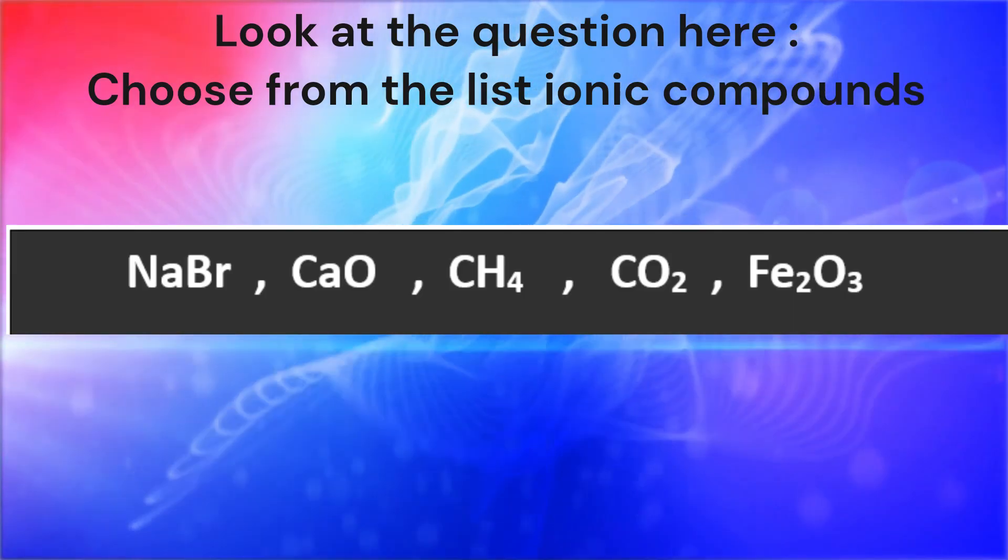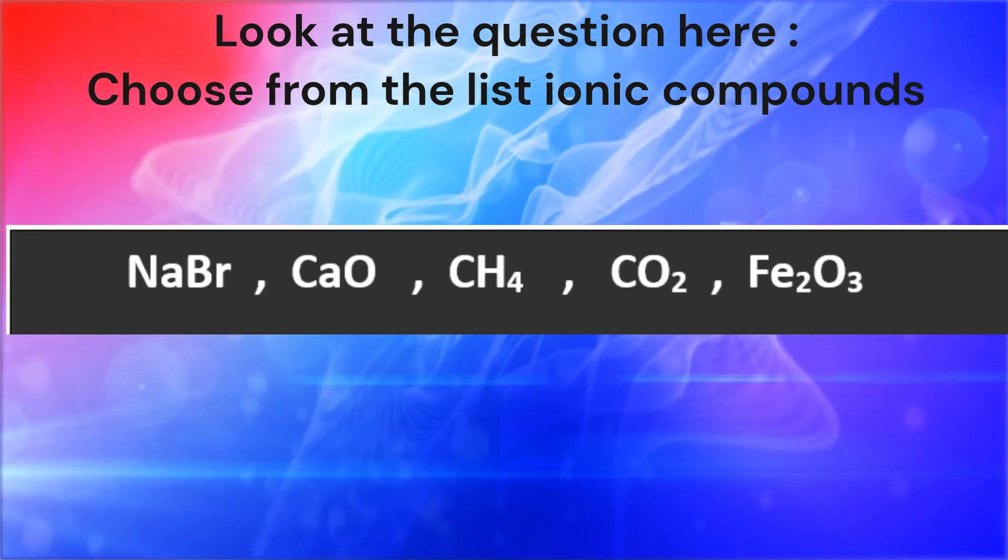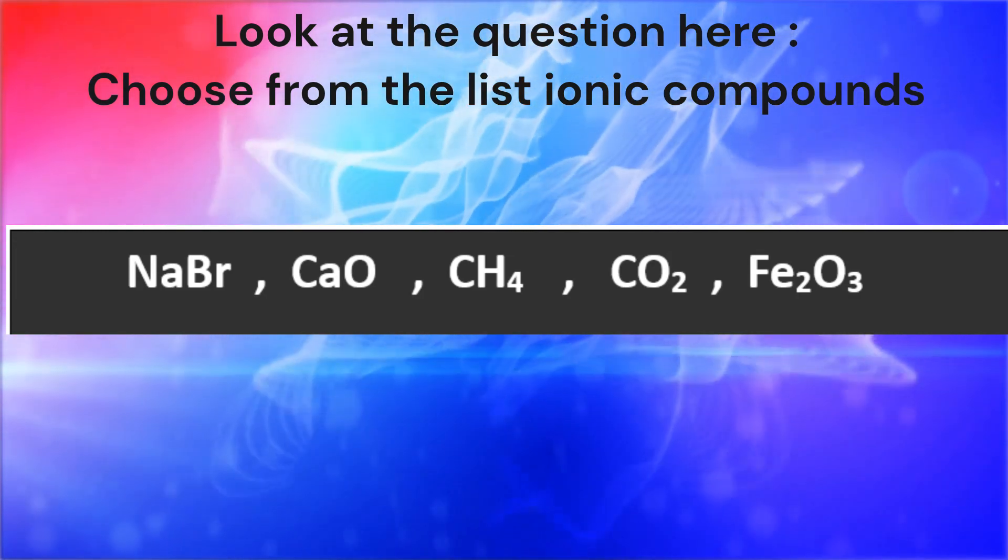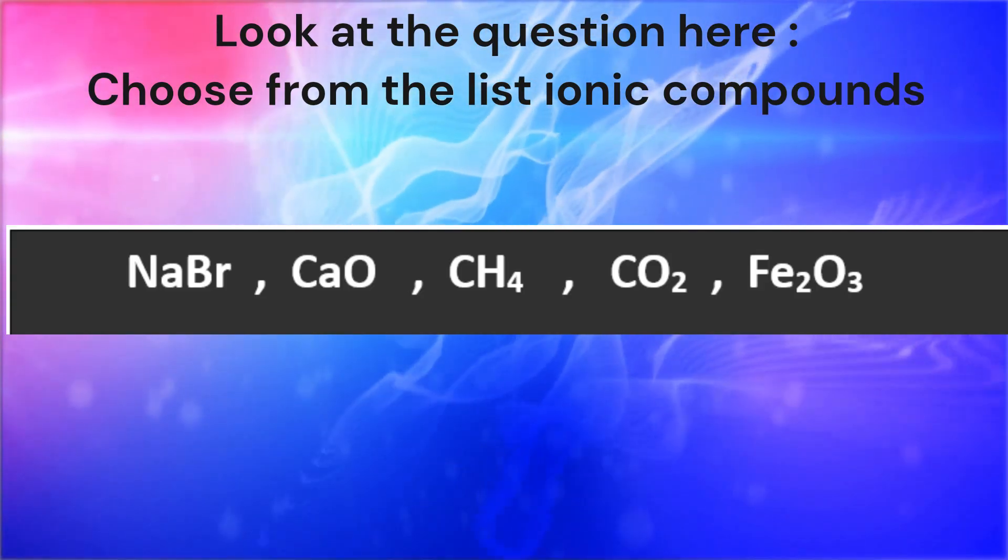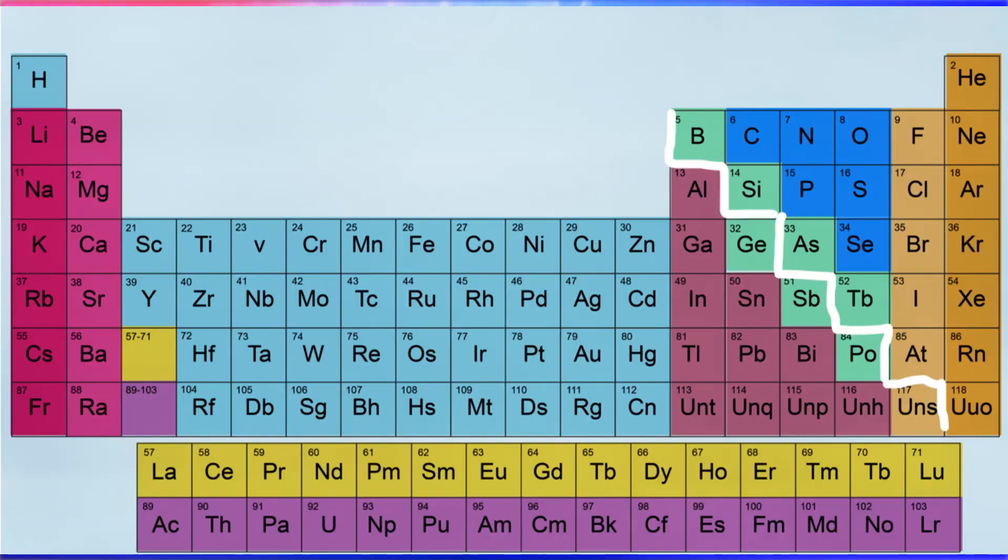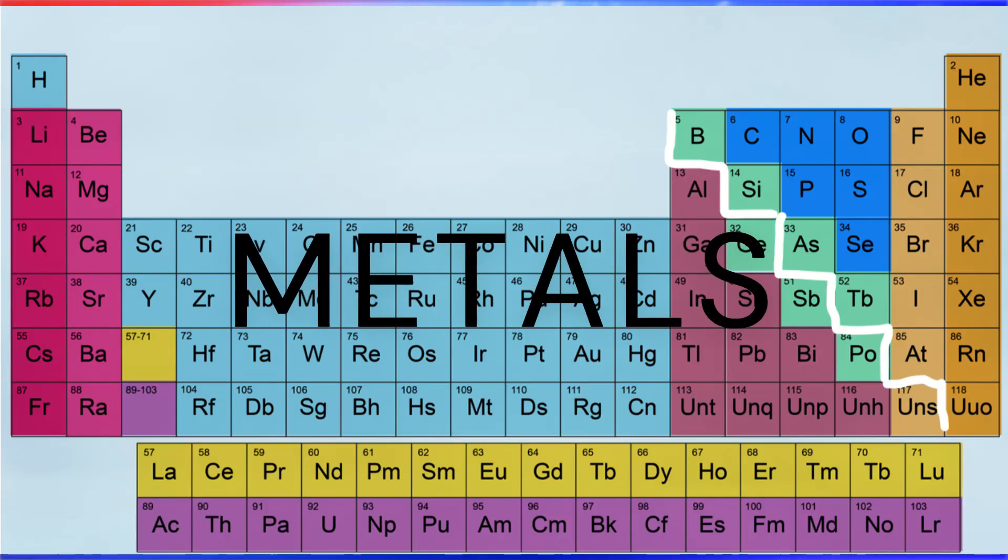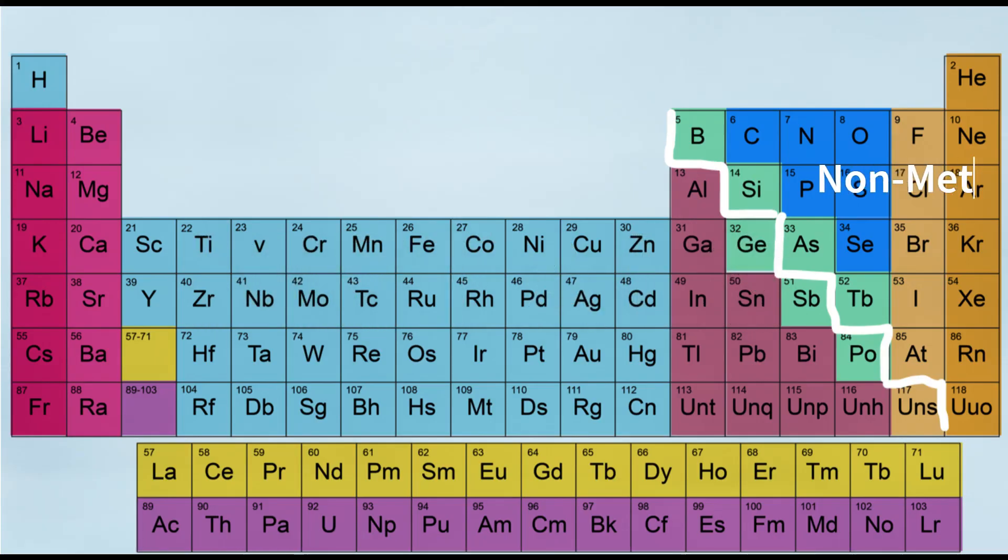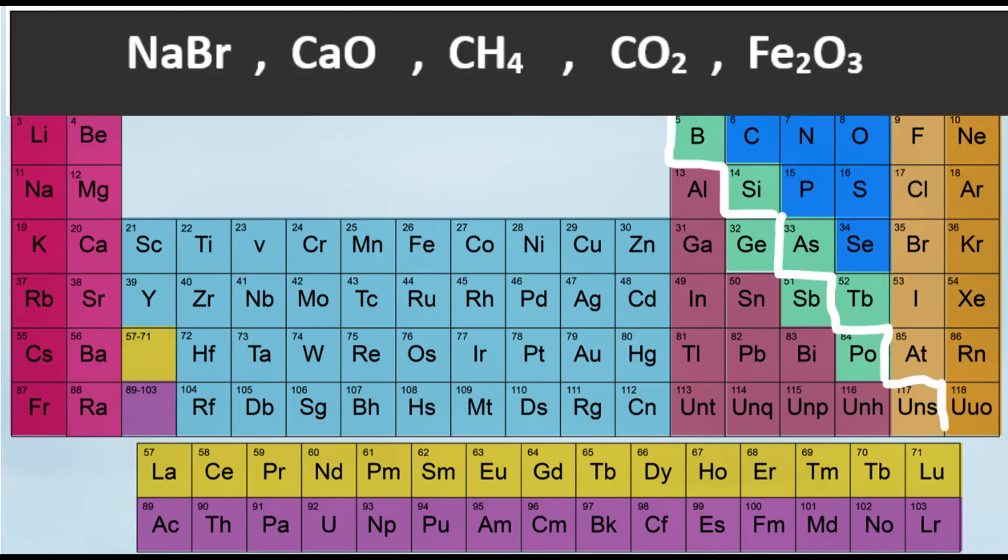Look at the questions: how can we identify an ionic compound? We know that ionic compounds are formed by metals and non-metals. The white line is a separator or borderline between metals and non-metals. Metals are present on the left side of the white line and non-metals are on the right side of the white line.